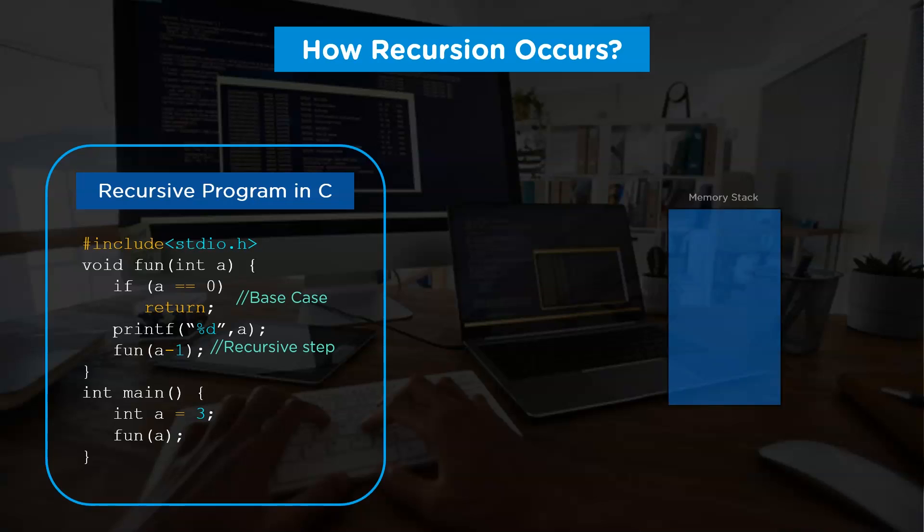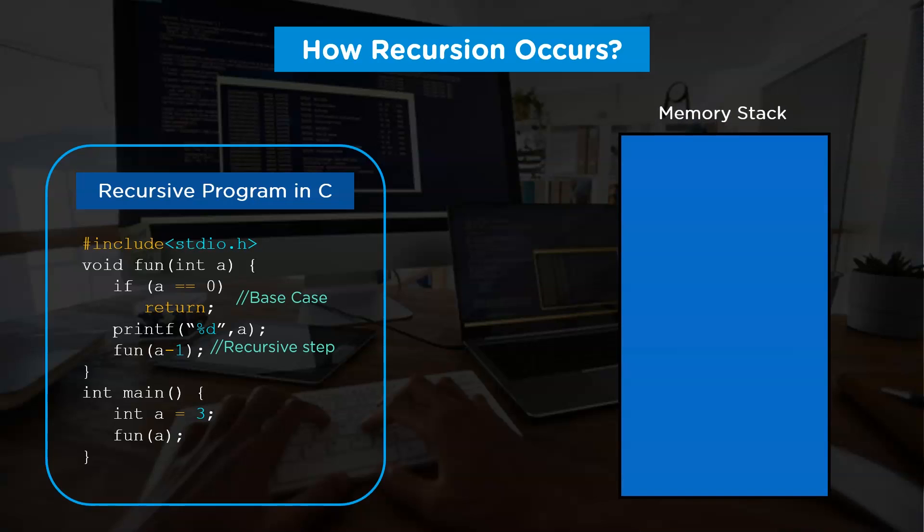Now whenever a function is called, its activation record will be maintained inside the stack. So for this program, we're going to look into its control flow. As we know, the main function gets invoked primarily by an operating system. Thus, we'll include the main function at first in our memory stack.